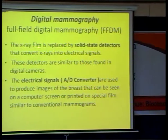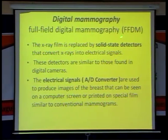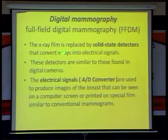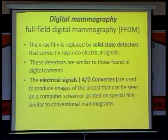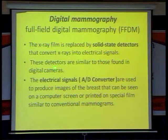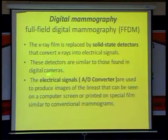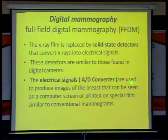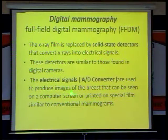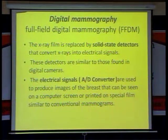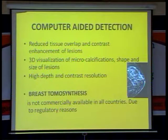In full field digital mammography, the film is replaced by a solid-state detector — a selenium detector — which converts the X-rays into electrical signals. These detectors are similar to a digital camera. The electrical signals through an analog-to-digital converter are used to produce the image of the breast, seen on a computer screen or printed on a special plate, unlike conventional mammography.